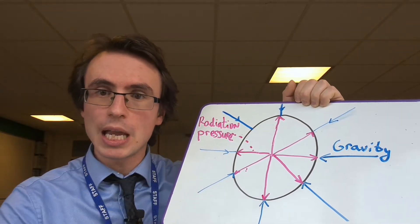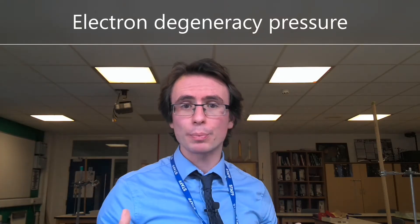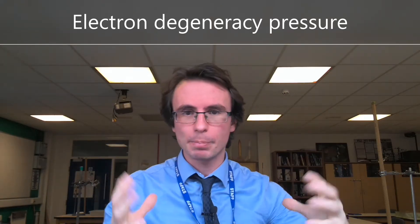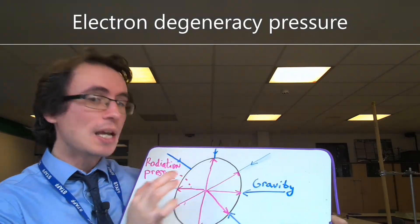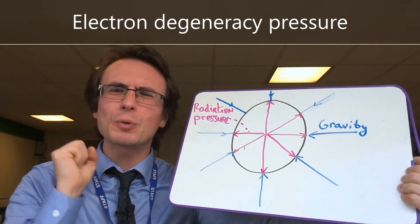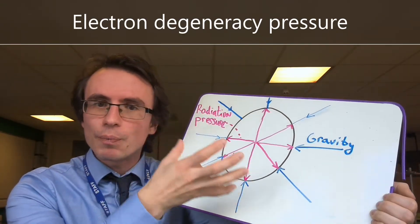In a white dwarf, when we apply even greater forces of gravitational collapse, what stops a white dwarf from collapsing further is a phenomenon known as electron degeneracy pressure. This degeneracy pressure stems fundamentally from quantum mechanics — specifically, a principle called the Pauli exclusion principle, which states that no two electrons can have the same quantum numbers. In other words, they cannot occupy the same space. This is what actually causes the radiation pressure in a white dwarf star.